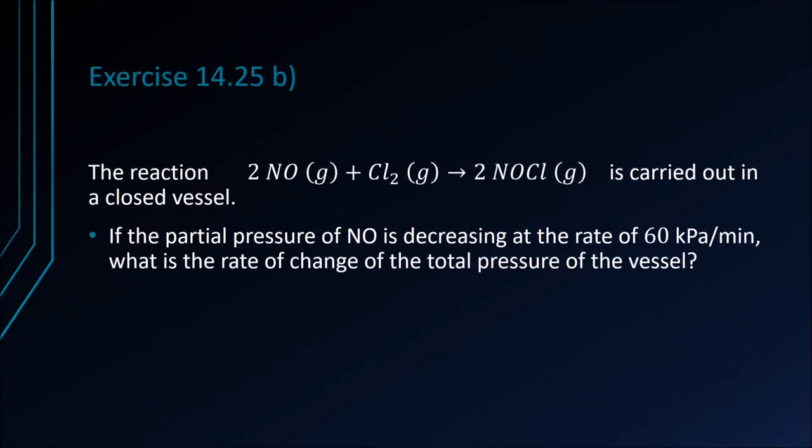Exercise 14.25b. The reaction 2NO(g) + Cl₂(g) → 2NOCl(g) is carried out in a closed vessel. If the partial pressure of nitrogen monoxide is decreasing at the rate of 60 kPa per minute, what is the rate of change of the total pressure of the vessel?